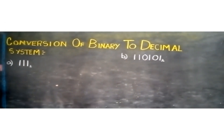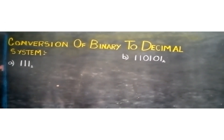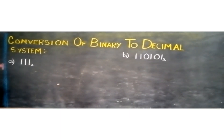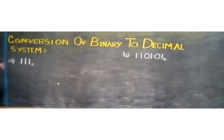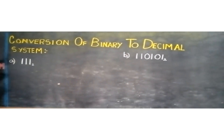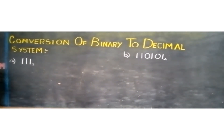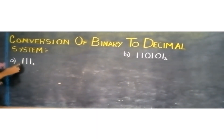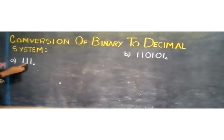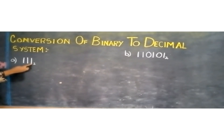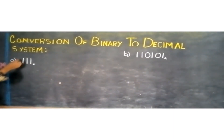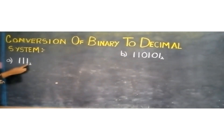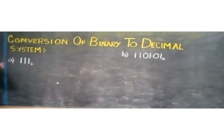Good morning, students. We have already learned about the base 5 system in the previous lessons. Our topic for today is the conversion of a binary number to the decimal system. Here we have a binary number which consists of three digits: 1, 1, and 1. As you all know, binary numbers have only two digits, that is zero and one, so all the digits in this binary number are less than two.